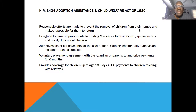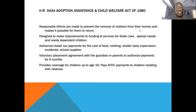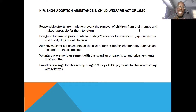What I've included as an example is HR 3434, which is the Adoption Assistance and Child Welfare Act of 1980. I chose this particular bill to use as an example to look at things that might come up as you're doing your policy analysis. I have worked for many years in child protection, so I'm very familiar with this legislation and what it actually does.